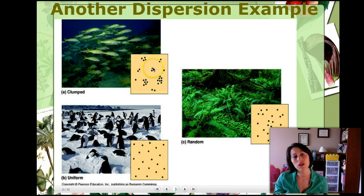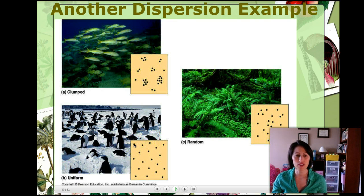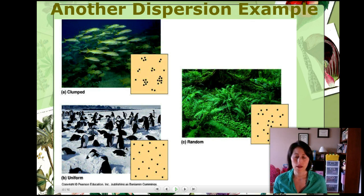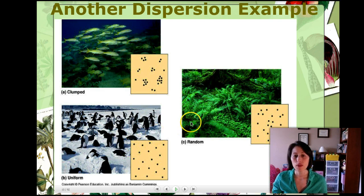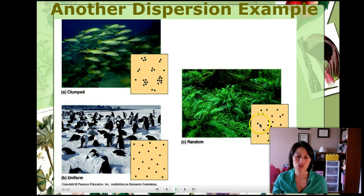Here's another example of clumped distribution — schools of fish, where you can see a small clump here, a small clump here, and a small clump here. Even or uniform distribution shows penguins with a pretty even pattern within the population. Another example of uniform distribution might be territorial predators like snakes, where each has its own area. Random distribution typically looks like weeds or ferns — not clumped, but with no real pattern to how they're distributed.